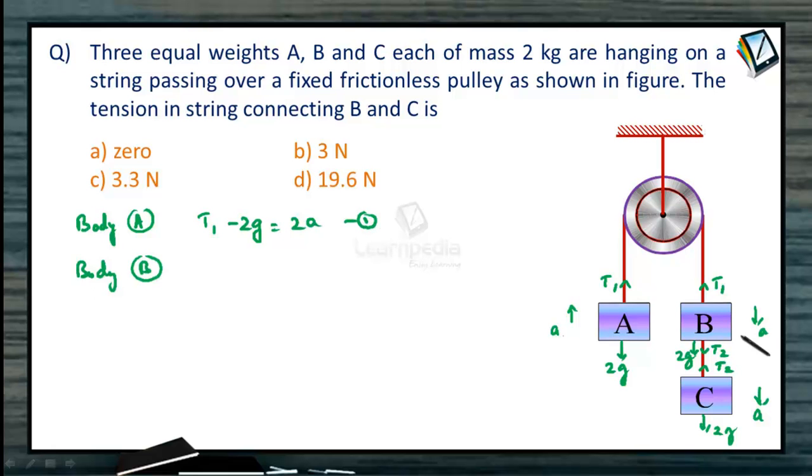For body B, it is moving down. So, we can write as T2 plus 2g minus T1 is equal to 2A. Equation 2. For mass C or body C, it is moving down. So, 2g minus T2 is equal to 2A.